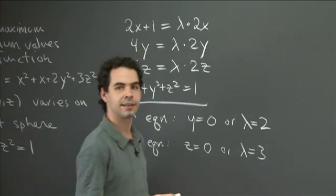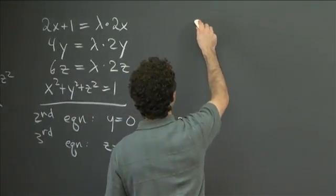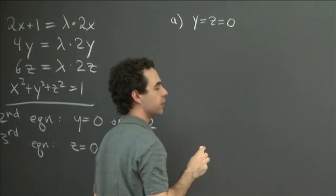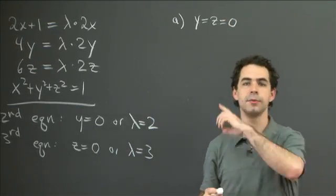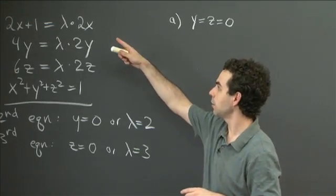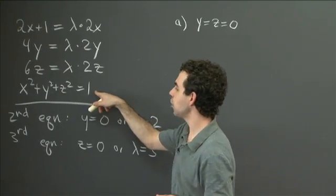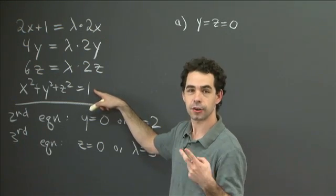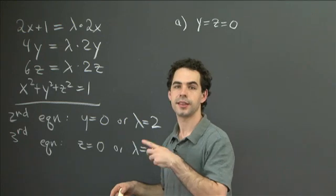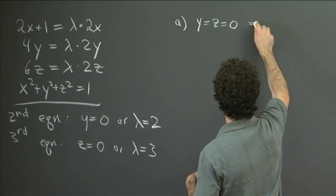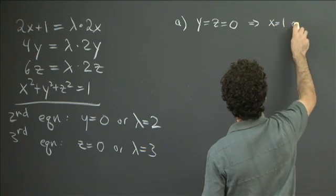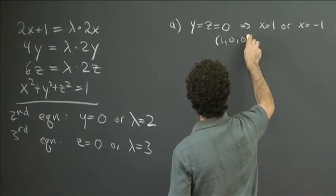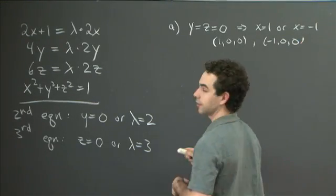Case A is when y equals z equals 0. When y equals z equals 0, we solve our constraint equation for x: x squared equals 1, so x equals 1 or x equals minus 1. This gives us the points (1, 0, 0) and (−1, 0, 0) that we're going to have to check at the end.